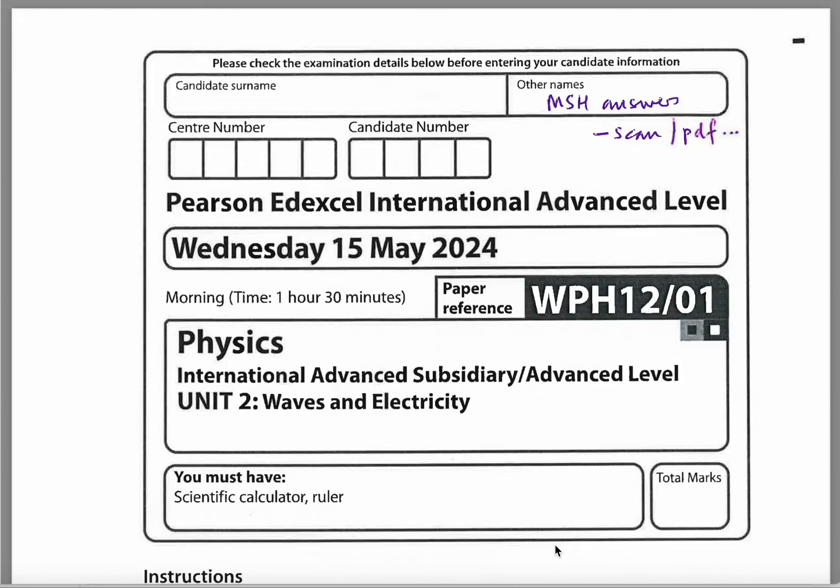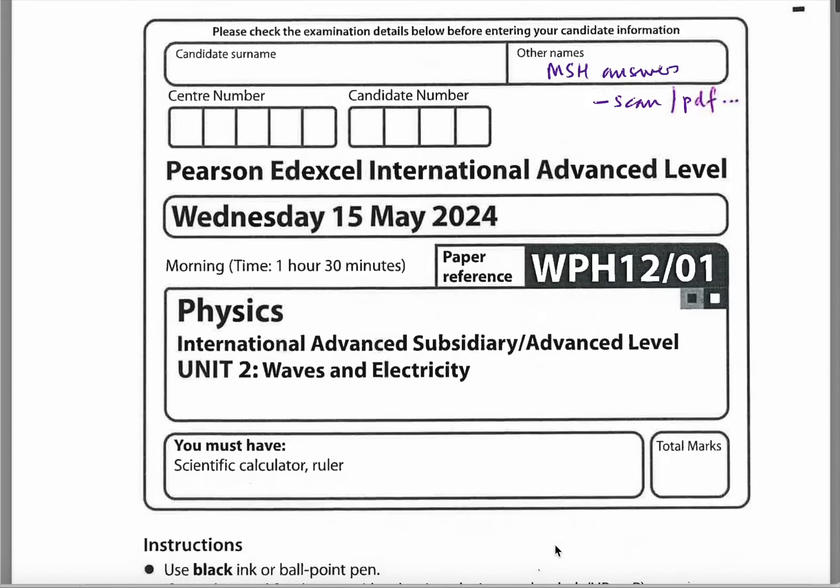I'm going to go through model answers for the May 24 Physics Unit 2 exam for the International A Level of Edexcel. Unit 2 is on Waves and Electricity. A couple of my students are retaking this module next week, so they want to do this paper again, and here it is.